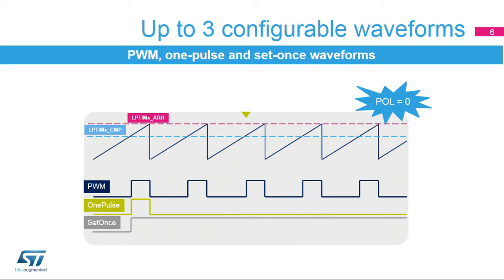If the last output state is the same as the one at the waveform's beginning, then one pulse mode is configured. If not, then set once mode is configured. The low-power timer's output polarity is controlled through the WAV-POL bit field in the LP-TIM-CFGR register.